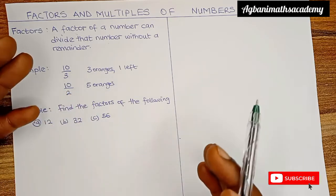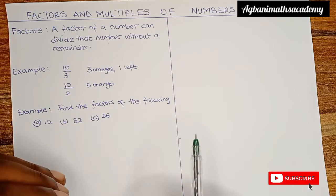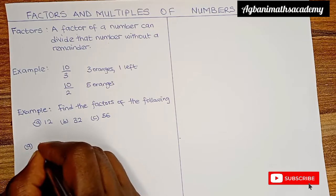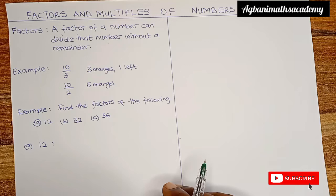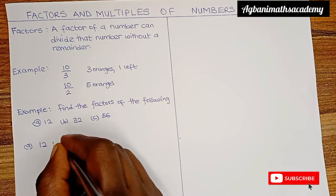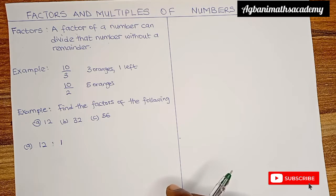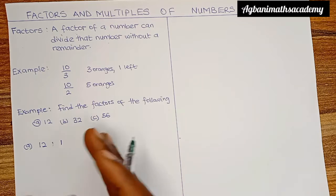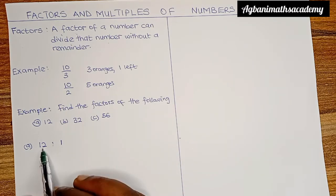We are going to look for all the numbers that can divide these 3 numbers without leaving a remainder. For A, we have 12. The first thing to know about factors is the smallest factor of every number is 1. So 1 is at the start of the list. The second thing to note is that the number itself is the largest factor of itself — so on the other end we have 12.